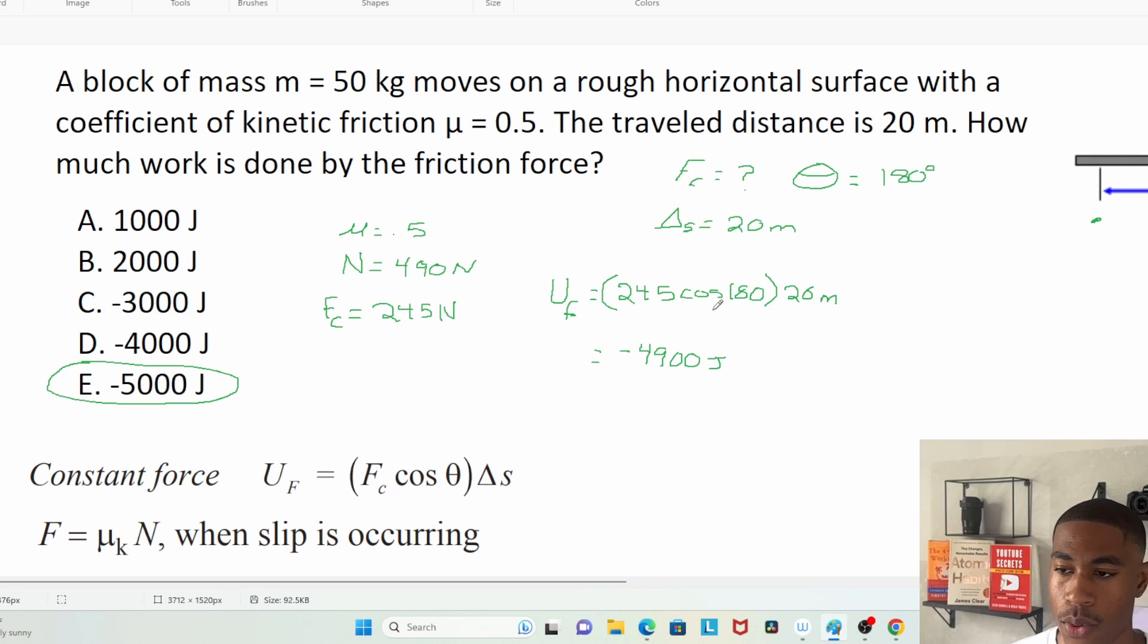Now the important thing that I just want to point out is: let's say you said that this theta that we're solving for was just zero degrees. If you put in cosine of zero, that's just going to give you one, versus you putting in cosine of 180 which gives you negative one.